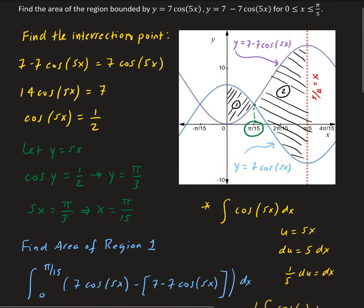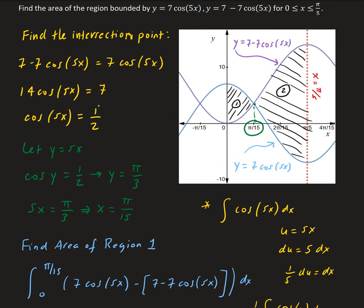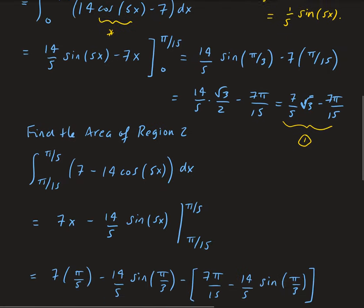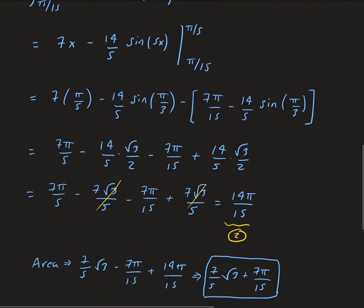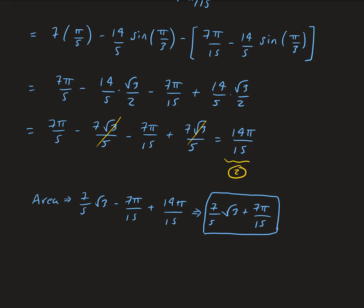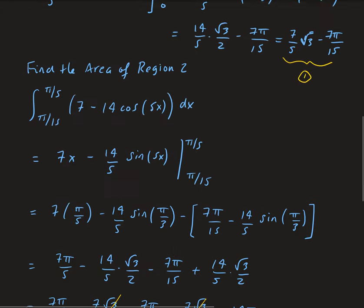To summarize: we calculated the area of the first region using the integral of 7 cosine 5x minus (7 minus 7 cosine 5x), from 0 to pi over 15. For the second region it flips: the integral of (7 minus 7 cosine 5x) minus 7 cosine 5x, from pi over 15 to pi over 5. Adding the two results together gives the final total area.